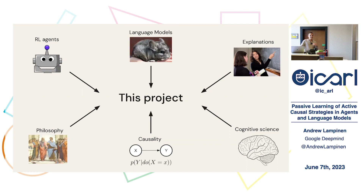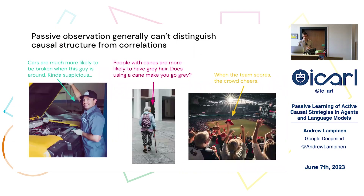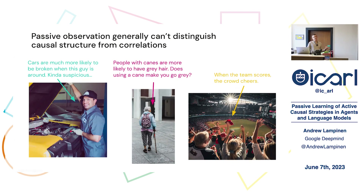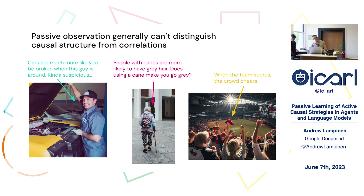Because of that, it's going to be a talk with a lot of content in it, so I'm going to dive right in. I want to start with this fairly well-known observation from causality that passive observations generally can't tell you the difference between causal structures and just correlations.